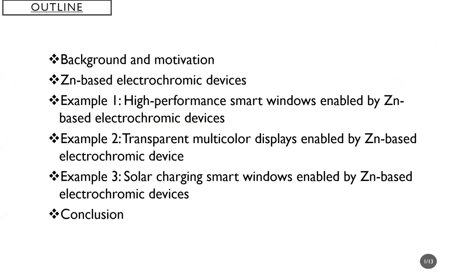Here is an outline of the topics. Firstly, I'm going to give some background information on electrochromic devices and the motivation to introduce zinc anode-based electrochromic devices. After that, I'm going to explain what the zinc anode means and how the electrochromic devices are improved. This is followed by three examples. Finally, I'm going to give a conclusion.